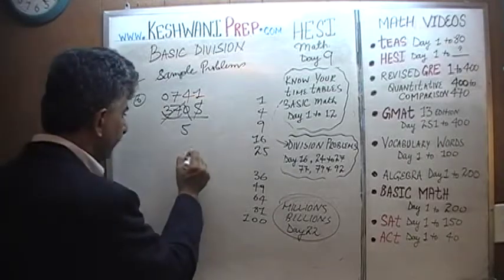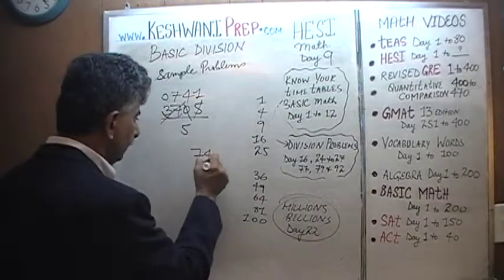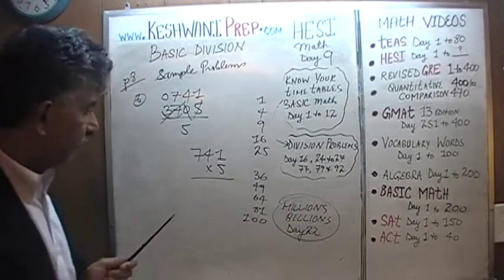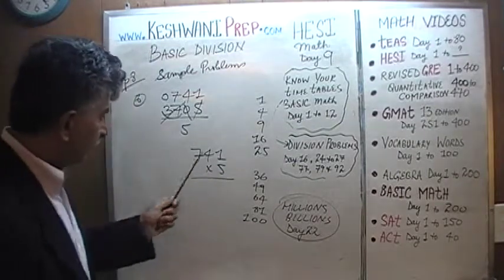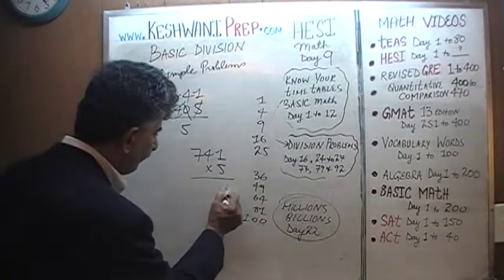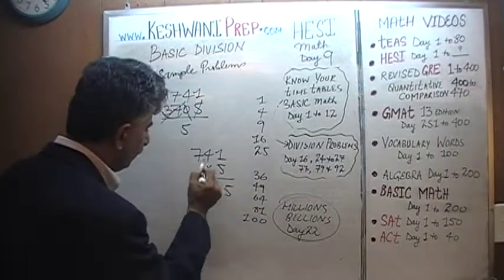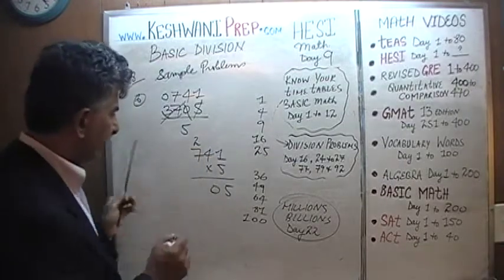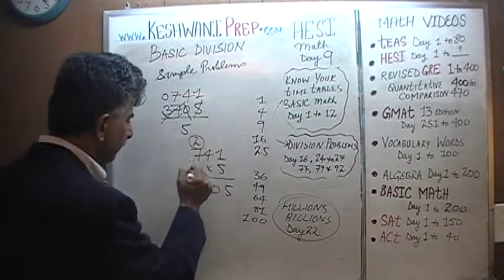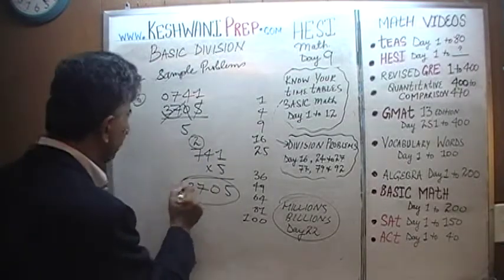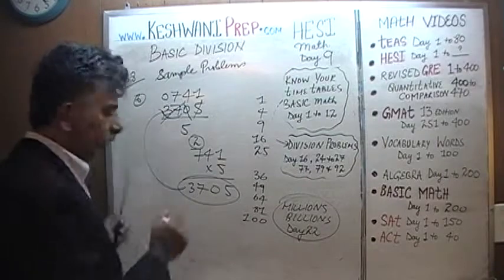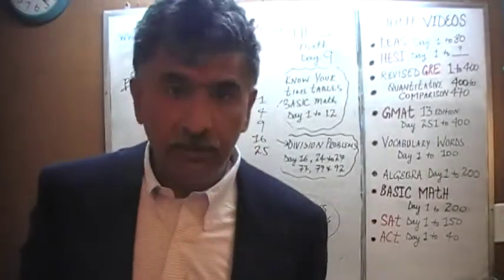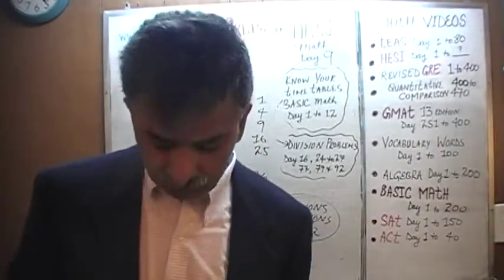To quickly verify: 5×1=5; 5×4=20, write 0 carry 2; 5×7=35 plus 2 is 37. We end up with 3,705 — what we started with. Correct.